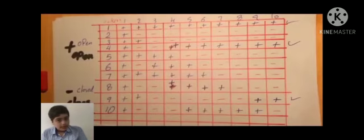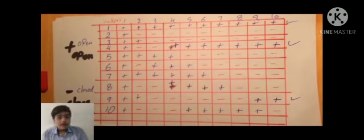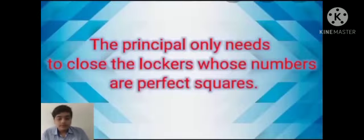So this is the question. I have made a chart. Plus means it is open and minus means it is closed. I have taken 10 lockers for 10 students. The first locker remains the same, and you can see in the end the fourth and ninth lockers are open.